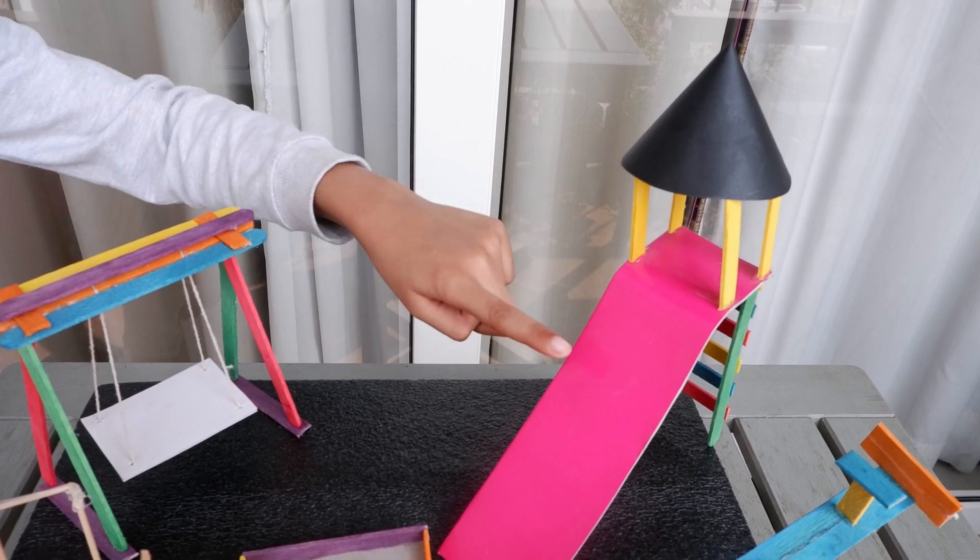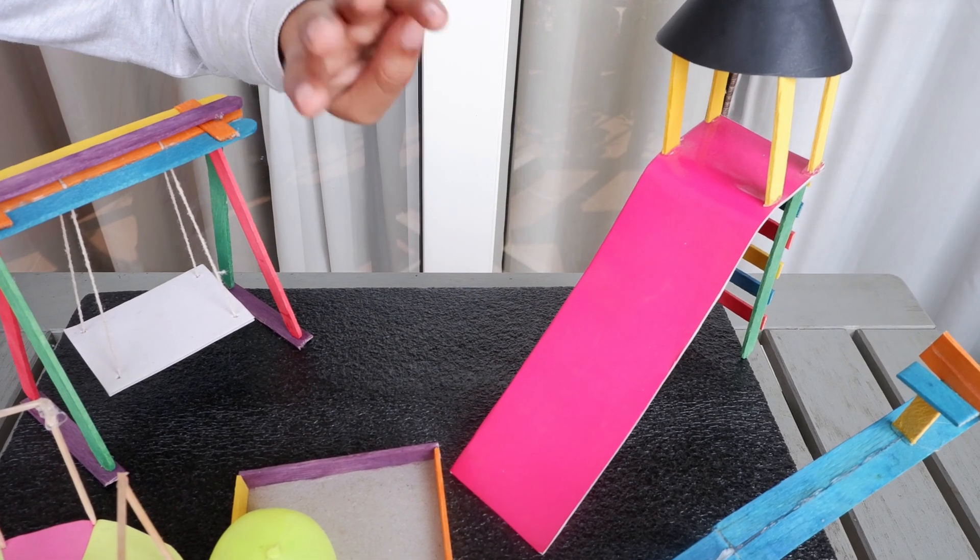The slide is shaped like a rectangle. A rectangle has four corners and four sides.